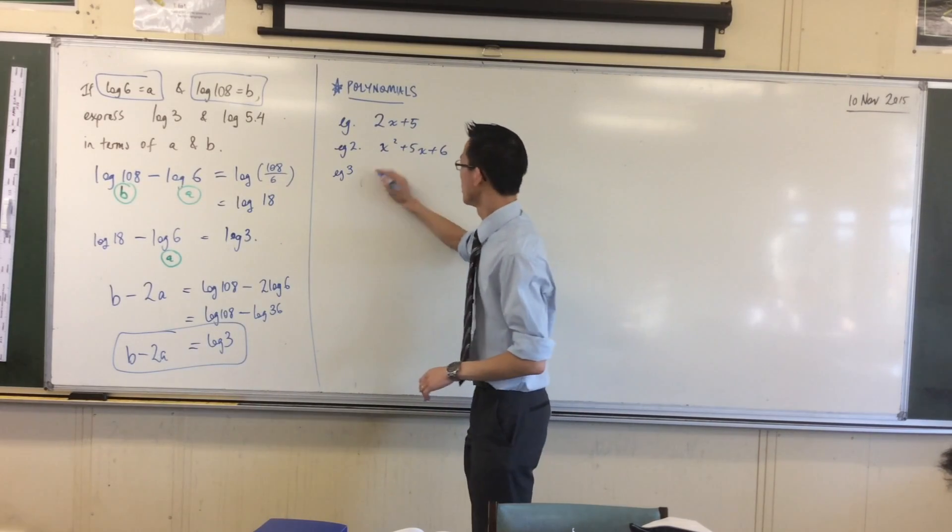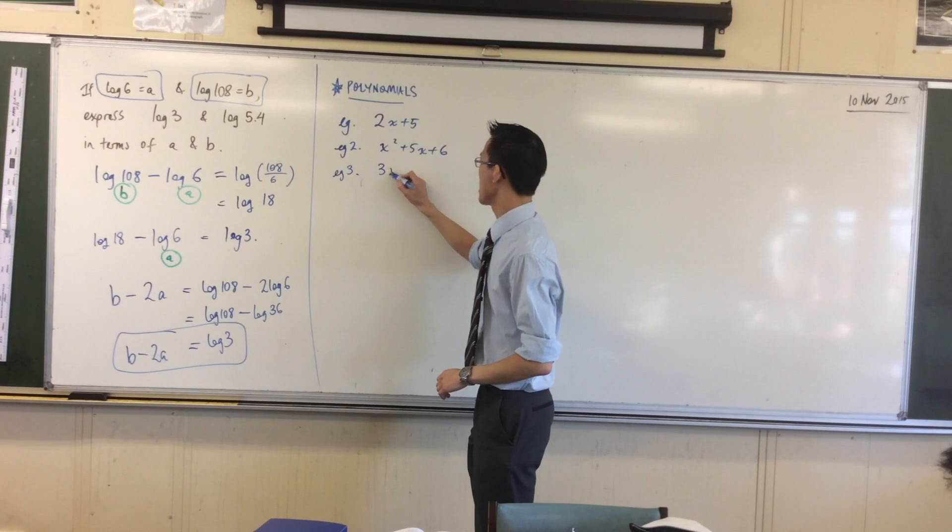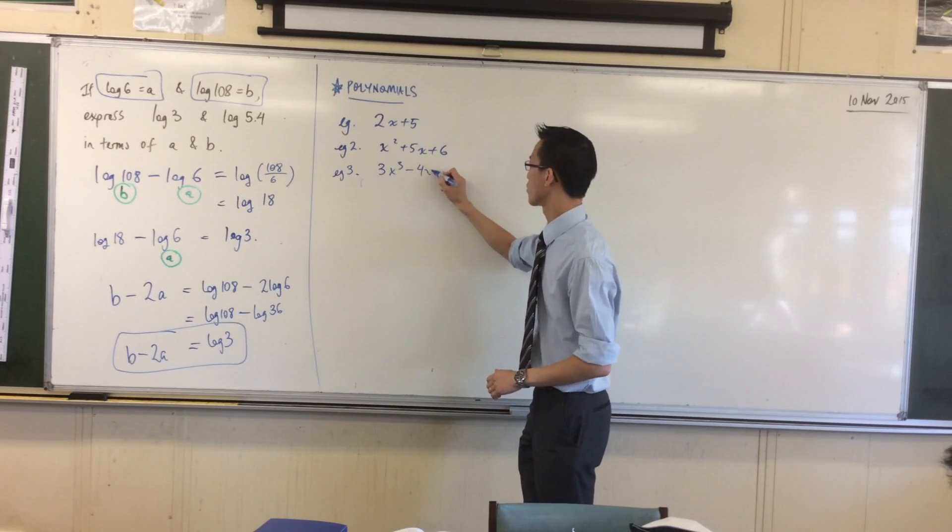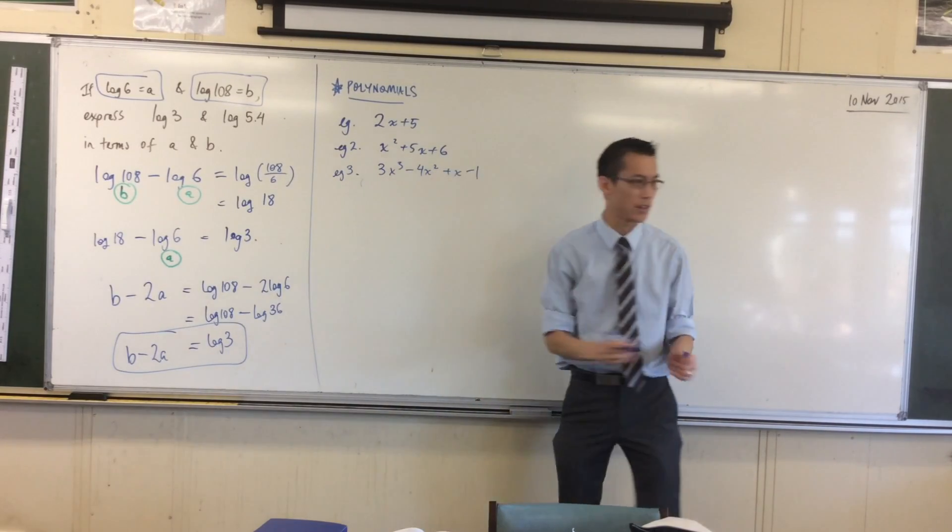So just as another example, I could have something like, oh, I don't know, 3x cubed minus 4x squared plus x, I don't know, whatever you like.